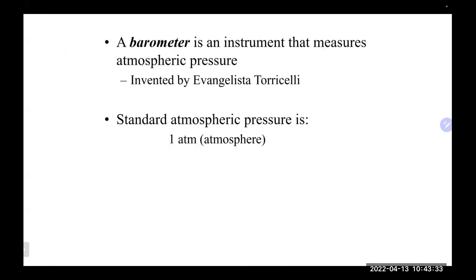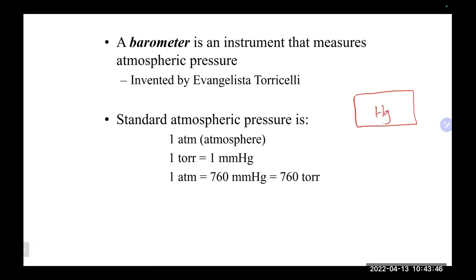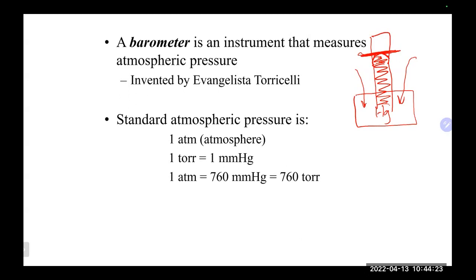One way we measure pressure is with a barometer — an instrument that measures pressure. Old-time barometers used a pool of mercury with a tube. As atmospheric pressure pushed down on the mercury, the mercury in the tube would rise, and you'd take a reading. Mercury has an inverse meniscus — it goes upward — so you read the top. You could read it in inches of mercury, millimeters of mercury, or centimeters of mercury.